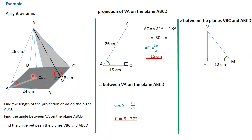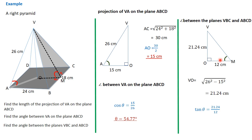The reason O,M is 12 is because M to O is half of B to A, since O is the center — so it is half of 24, which is 12. We need to get the distance V,O. Using the triangle, V,O equals the square root of 26 squared minus 15 squared, which gives 21.24 centimeters. Now using trigonometry: tan theta equals 21.24 divided by 12 — opposite over adjacent — and the inverse gives 60.53 degrees. The angle between the planes V,B,C and A,B,C,D is 60.53 degrees.